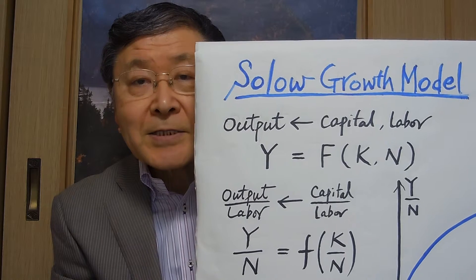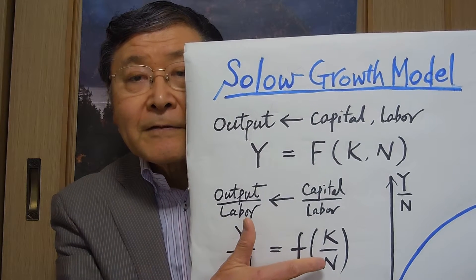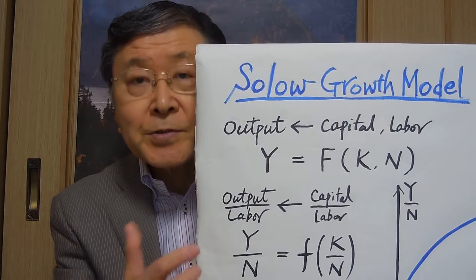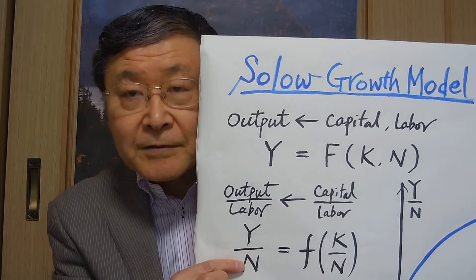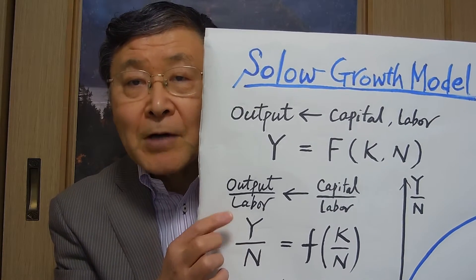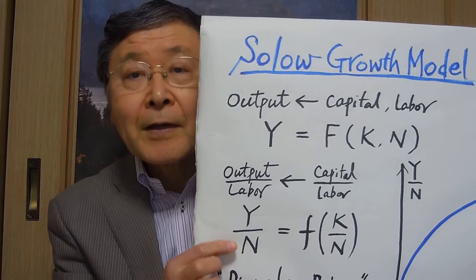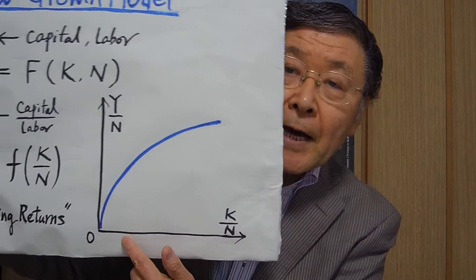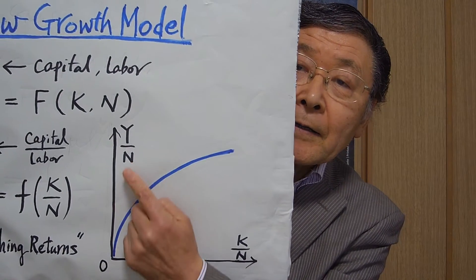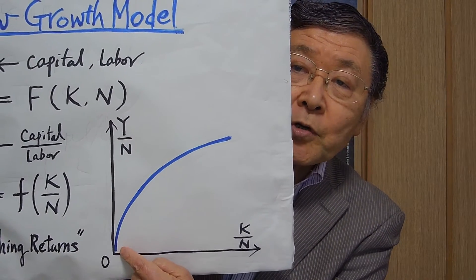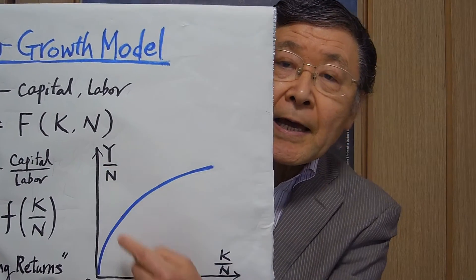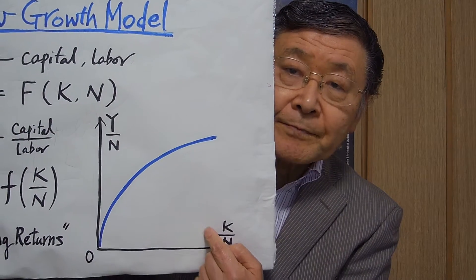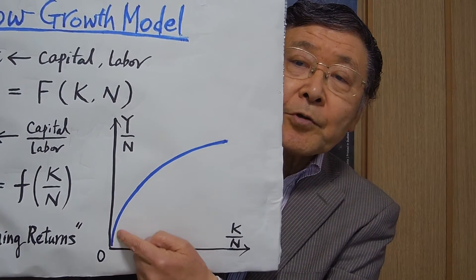This says that each worker works with more capital, like machines and computers. Then each worker becomes more productive to produce more output. So output-labor ratio becomes higher. This relation can be shown in this diagram, where output-labor ratio is measured along the vertical axis, and the capital-labor ratio is measured along the horizontal axis.